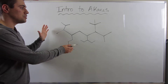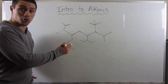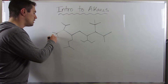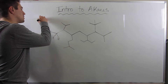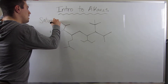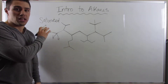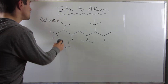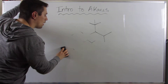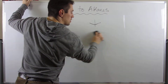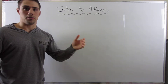Alkanes are completely saturated molecules. They only have carbon-carbon single bonds, and any other bond that a carbon will make is between itself and a hydrogen. That's what we mean by something being saturated — there are no double bonds, there are no triple bonds, it's just carbon and hydrogen. The main thing I want to cover in this video is how to rank boiling points and melting points of alkanes if you were given a certain number of them and asked to rank them.